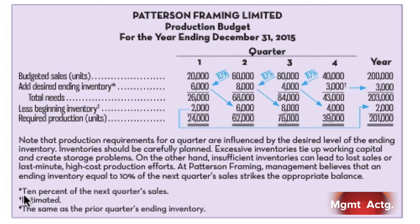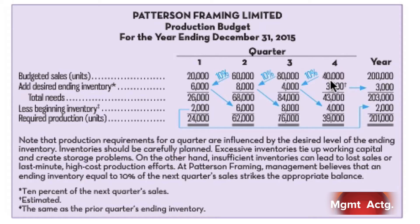There's an assumption at the bottom: 10% of next quarter's sales. For safety reasons, just in case there's a disruption in production, a buffer inventory of 10% of next quarter's sales makes sense. So 10% of 60,000 is 6,000 - we have to make that in this quarter as well. In Q3 we're going to sell 80,000, so 10% is 8,000; we need to end Q2 with that volume. For Q4, 40,000 - 10% is 4,000.